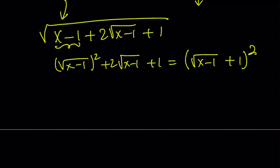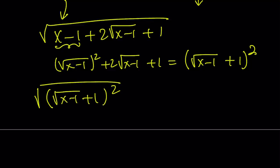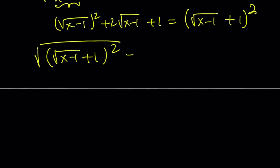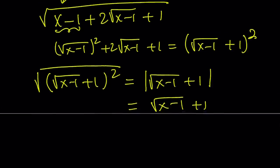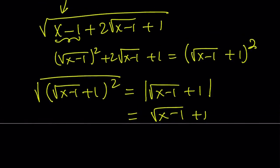We get square root of (√(x−1) + 1) quantity squared. And since we're square rooting it, the result should be the absolute value of the inside. But if you look at the absolute value, you're going to notice that this is a positive quantity — because square root of x minus 1 is greater than or equal to 0, plus 1 makes it greater than 0. Therefore, its absolute value is going to equal itself. So that's the first part.